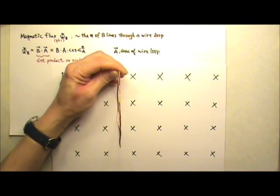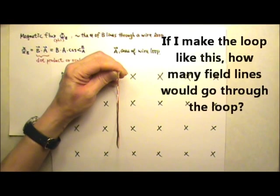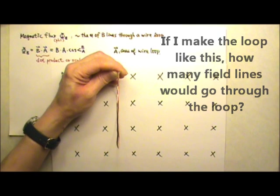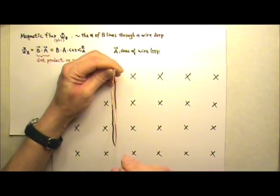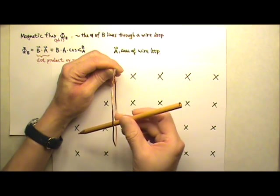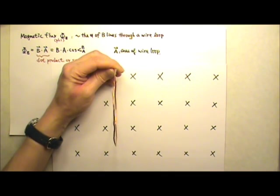If I make the loop like this, how many field lines would go through the loop? Zero. The field lines would just go next to the loop. None of the field lines would go through the loop. The flux would be zero.